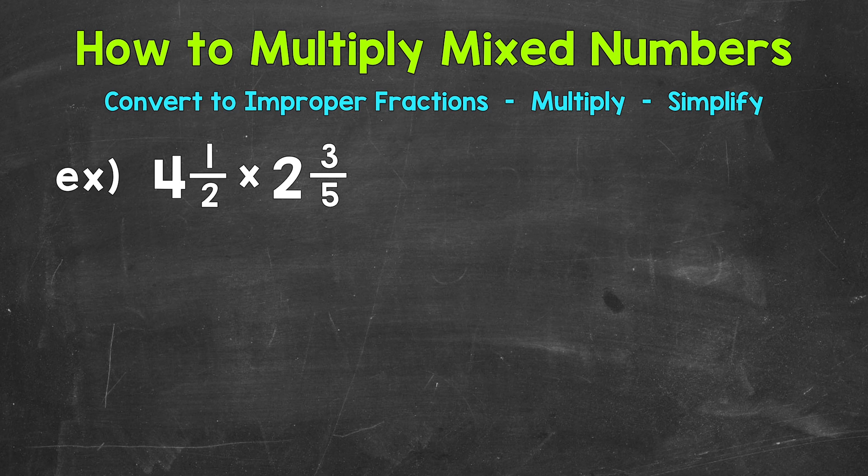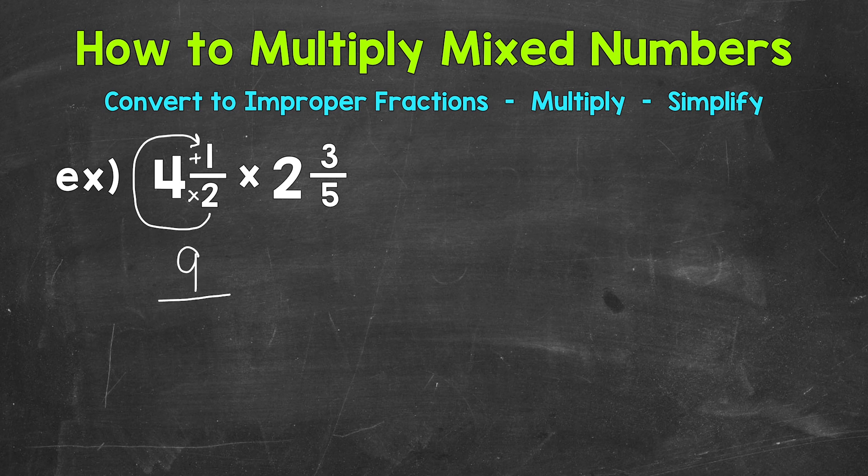So in order to do this, we start at the bottom. Let's start at the bottom here and we work our way to the top. We multiply, then add. So we do two times four, our denominator times the whole number. So two times four is eight plus our numerator of one. That gives us nine. So again, two times four is eight plus one gives us nine. That's the numerator of our improper fraction. We keep our denominator of two the same. Now that improper fraction is equivalent to our mixed number. They're just in different forms. We're not changing the value of the problem at all when we convert to an improper fraction.